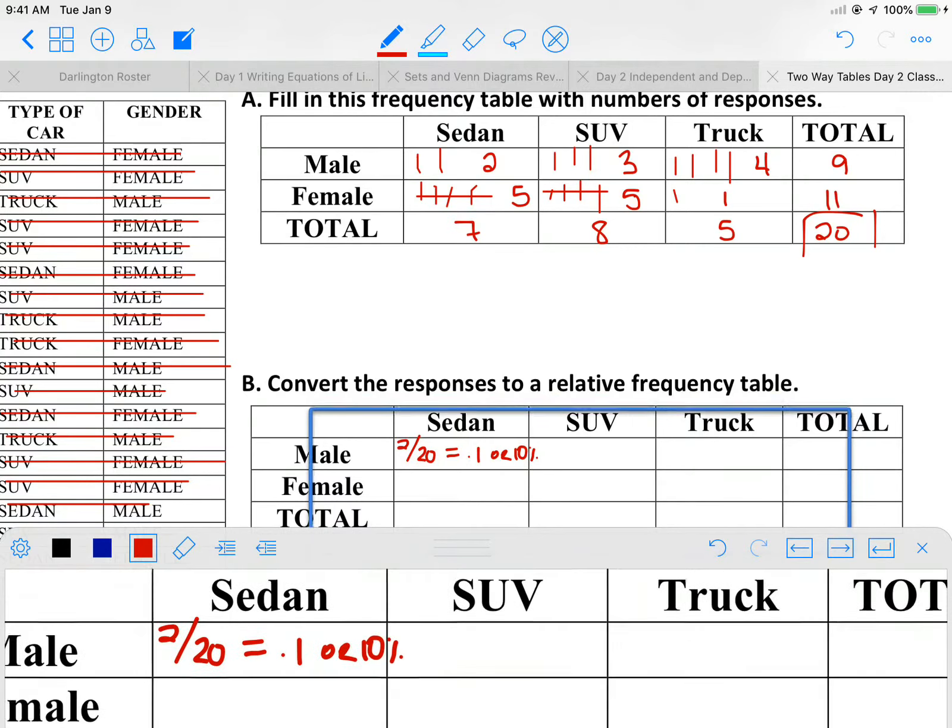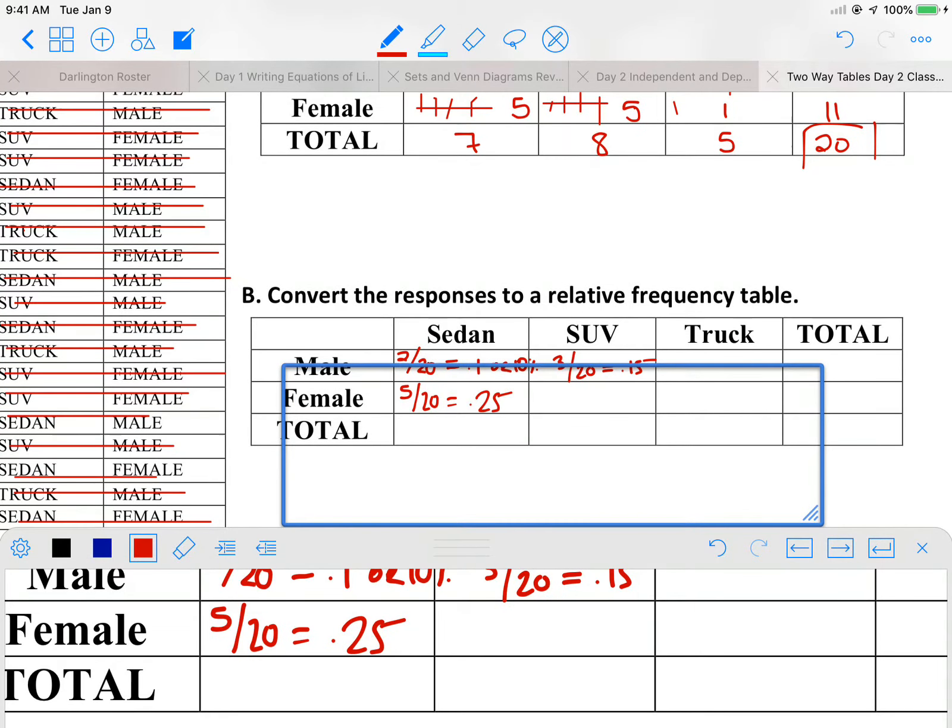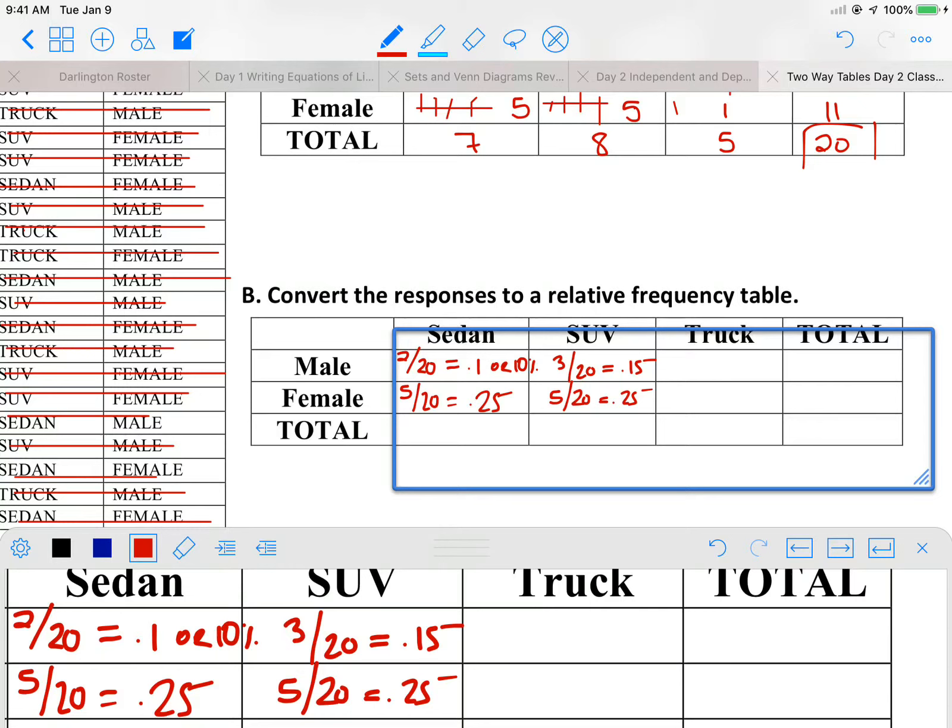It's up to you. And you're going to keep going and doing that the whole way through. So 5 out of 20, which is 0.25, 3 out of 20, which is 0.15, 5 out of 20, which we just did, is 0.25. And then we got 4 out of 20, which is 0.2. And then finally 1 out of 20, which is 0.05.